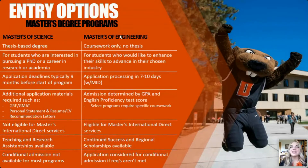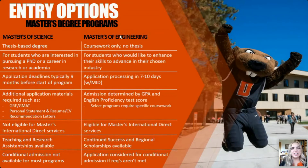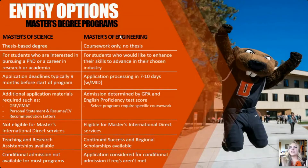The master's of science is going to be a better fit for students who are interested in getting a PhD, or a career in research or academia. It doesn't mean that master's of engineering students can't pursue those paths — it's just more of a direct route going through the master's of science program.